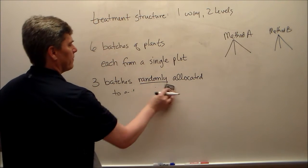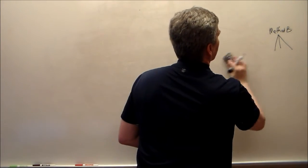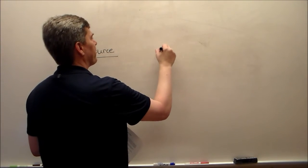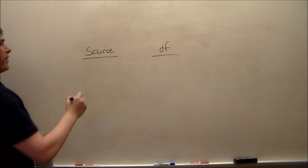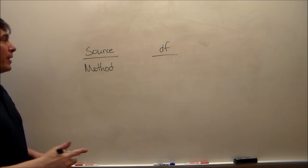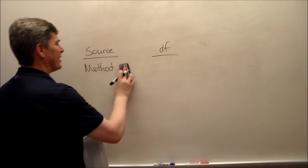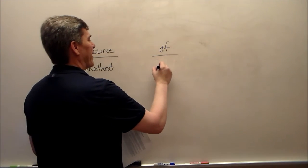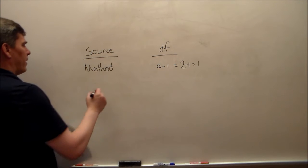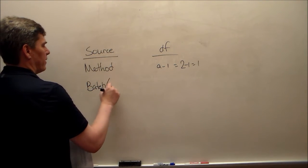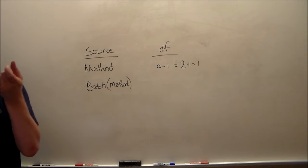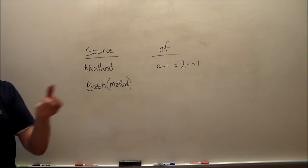Let's draw the ANOVA table. Source: degrees of freedom. Method — our fixed effect — had two levels, so the degrees of freedom will be A minus one, which is two minus one, which is one. Then batch nested within method: batch only went to method A or method B — there was no crossover. So batch by method.